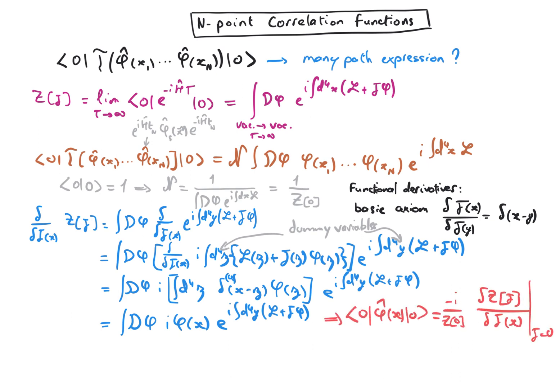So if we take another functional derivative of this expression, that will bring down another field phi. So with a delta j of y, we will have another phi of y in addition to the phi of x, and so on and so forth.